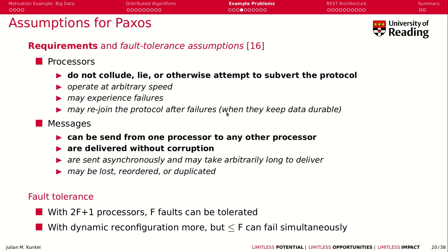Messages can be sent from one processor to any other processor and are delivered without corruption — meaning they don't change the value. However, they can be sent asynchronously, so you can start sending messages without knowing they've been received yet. They may take arbitrarily long to deliver, and they may be lost, reordered, or duplicated. This is really what we mean by fault tolerance in dealing with Paxos.